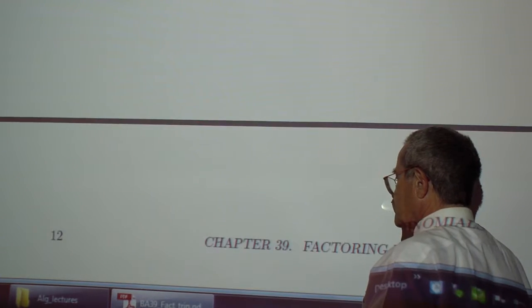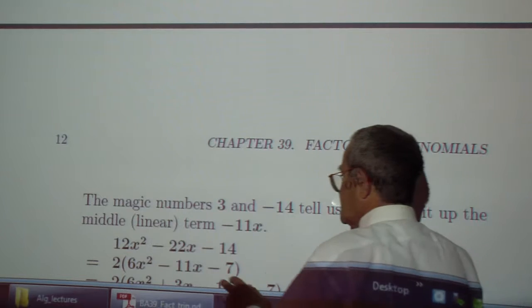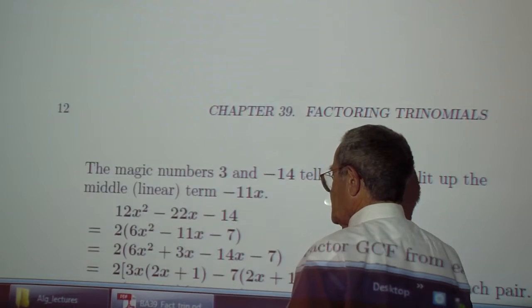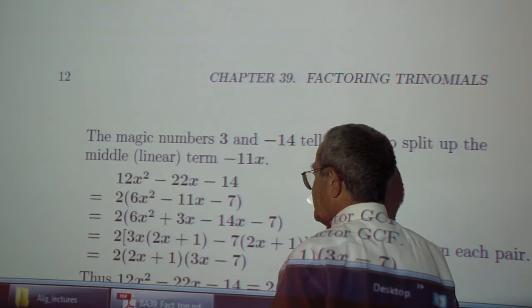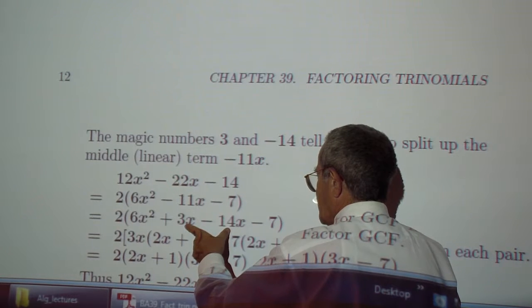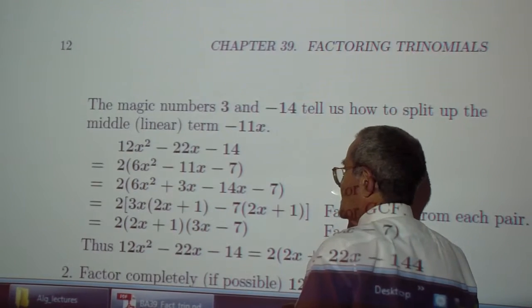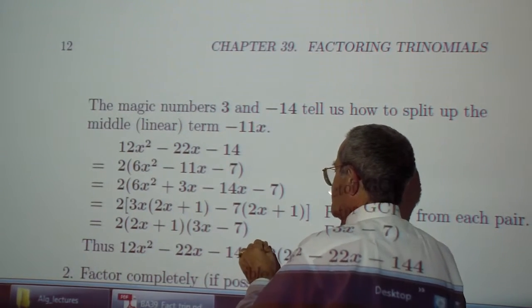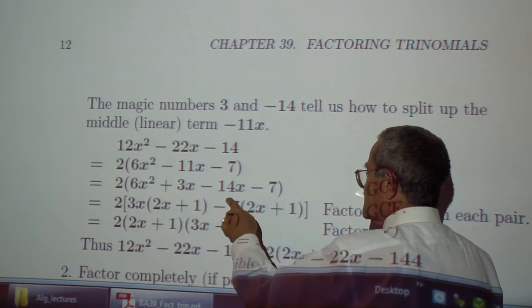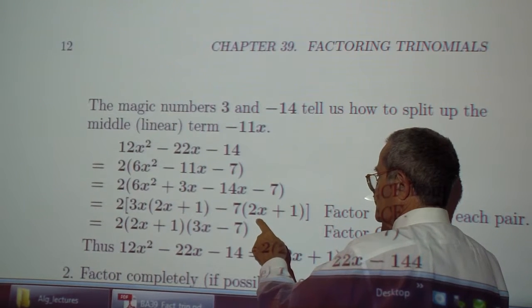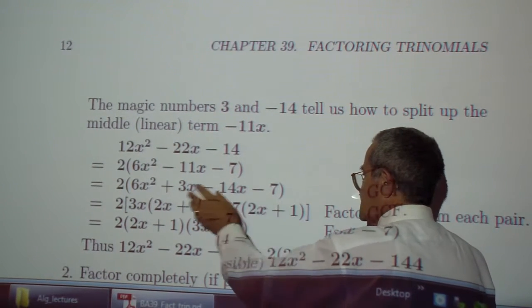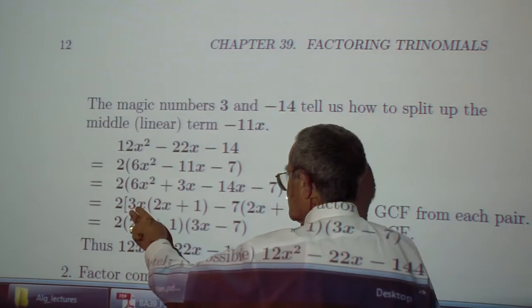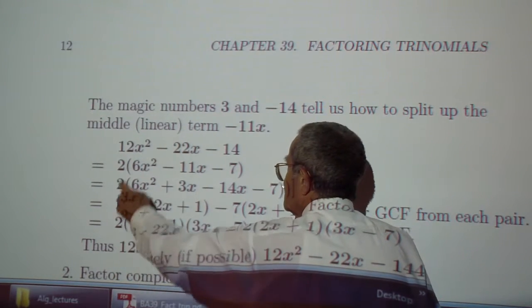So 3 and negative 14 are the magic numbers that let me split up the negative 11. 3 minus 14 is negative 11. From the first 2, factor out the 3x. From the last 2, factor out the negative 7 because you want the positive 2 here. So 2x plus 1, 2x plus 1. You're left with 3x minus 7. Times 2. Don't forget that 2.